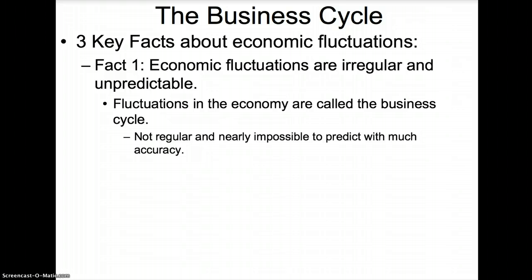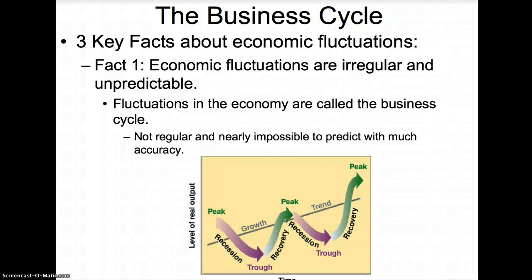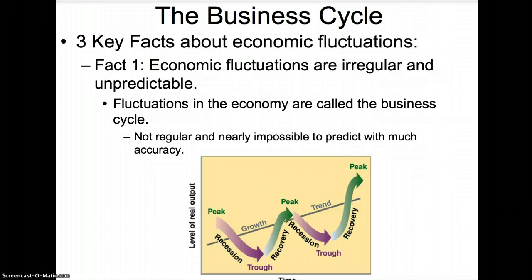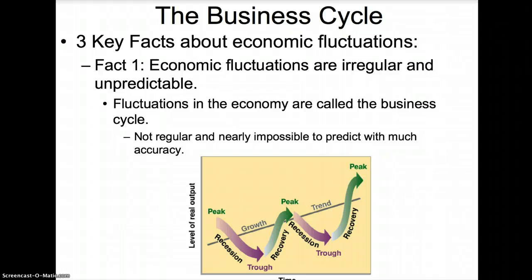Let's look at the business cycle on a diagram. Time is measured on the horizontal axis, and the level of real output is measured on the vertical axis. The business cycle has four sections: a peak, in which output is high; a recession, in which output is decreasing; a trough, in which output reaches its lowest level; and a recovery, in which output increases. Although the economy is always fluctuating and experiencing recessions, the growth trend is upward sloping, meaning that over time the economy is increasing in size — there is positive, long-run economic growth.